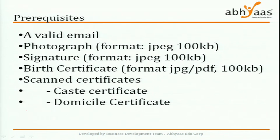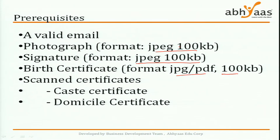You need a photograph in JPEG format — it should be recent and not more than 100 KB. If it is more than 100 KB, there are different tools you can use to compress it. You also need a signature done on a rectangular sheet, again in JPEG format and less than 100 KB.